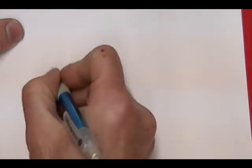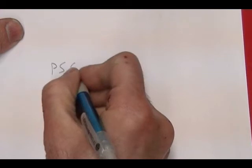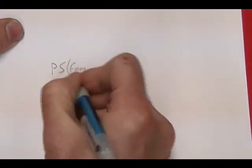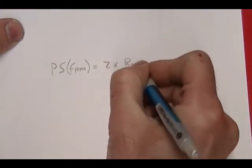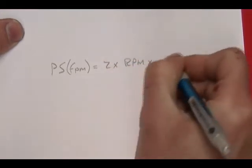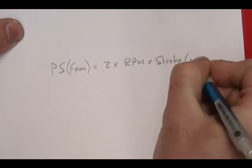The formula to calculate piston speed in feet per minute is equal to 2 times RPM times stroke, and the stroke must be in feet.